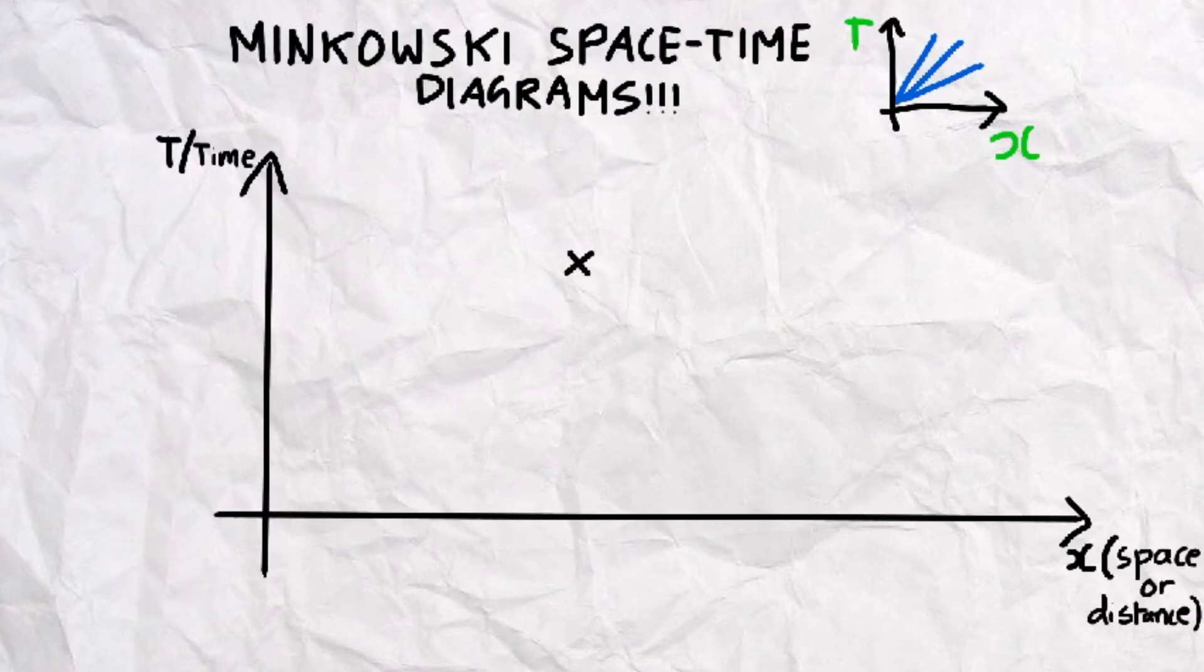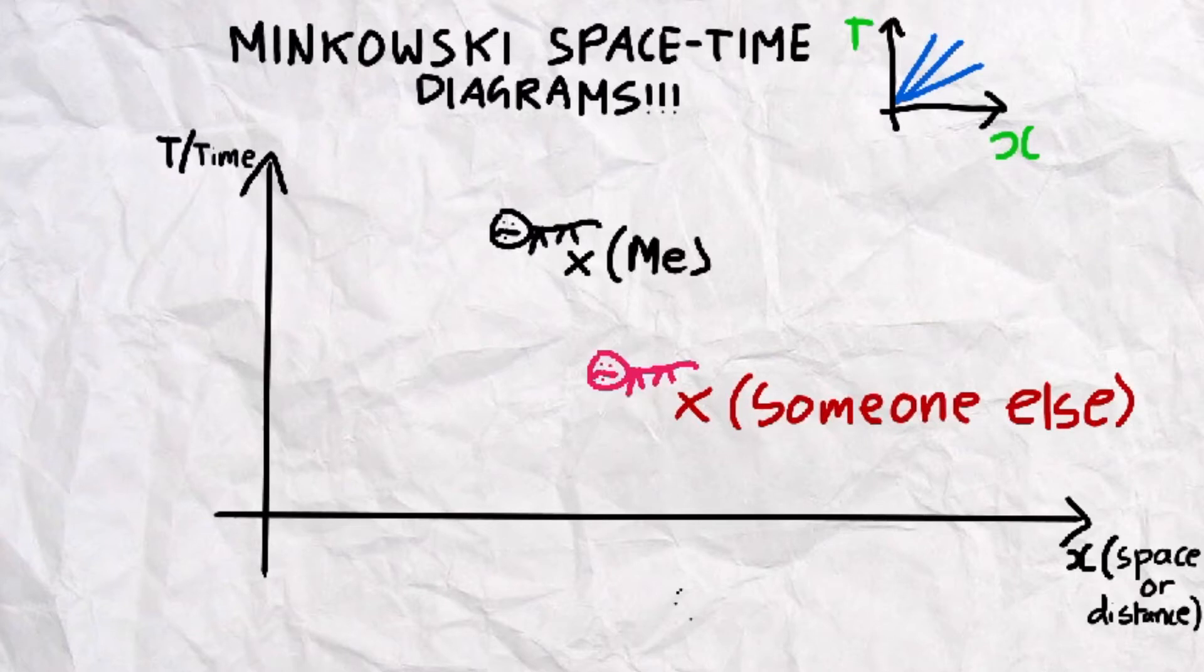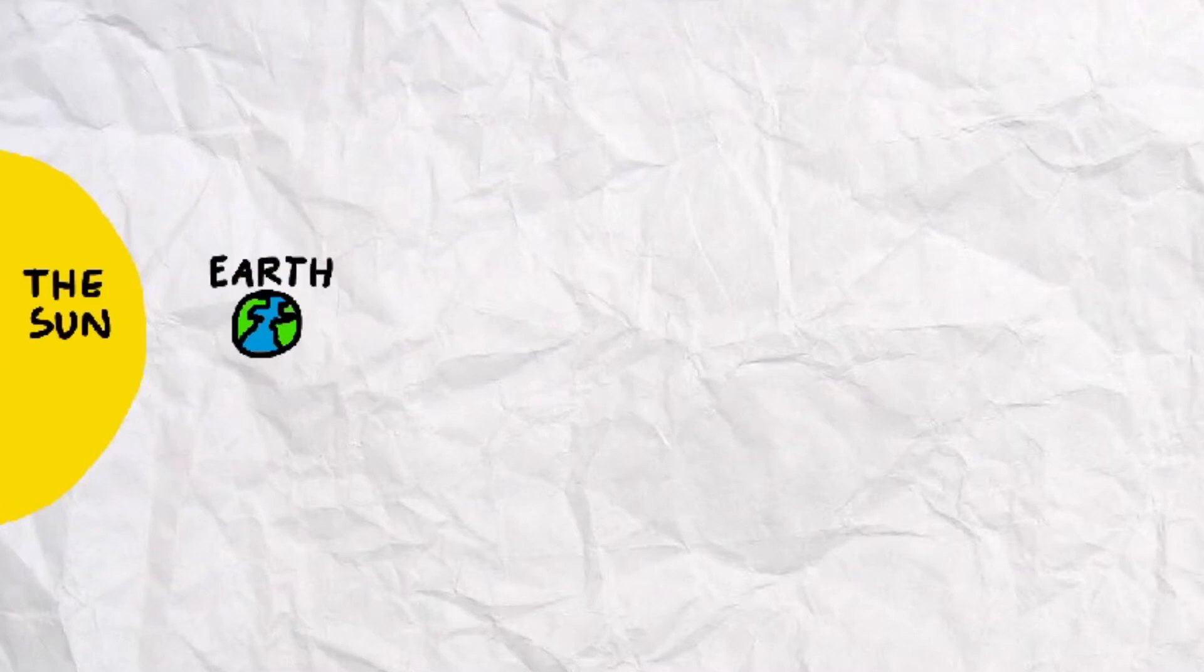For example, I might observe a cat in this specific position of space and time. However, another person may observe it in a completely different position. Thus, how can we write one perspective according to the other? That is the general wanted outcome from the space-time diagrams. So with that said, let's dive into what Rømer observed.